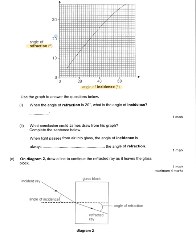We use the graph to answer: when the angle of refraction is 20 degrees, what is the angle of incidence? We find 20 on the refraction axis, read along to the line, then move down to the x-axis. Each small square is worth 2 degrees, so this meets at around 30, and halfway to the next square gives 31 degrees. Depending on how you draw your line, anything between 30 and 32 would be accepted as a correct answer.